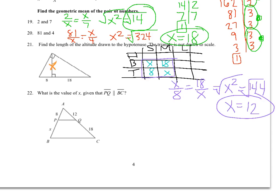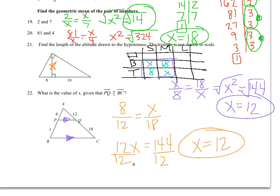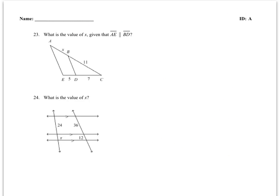For 22, what is the value of X given that PQ is parallel to BC? I can use side splitter theorem. So all I need to do is set up a pattern of some sort. I'm going to do 8 over 12 equals X over 18. 8 times 18, I just did that, I get 144. So 12X equals 144. And when I divide by 12, I get X equal to 12.